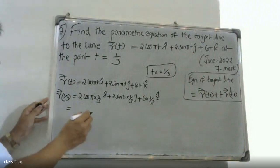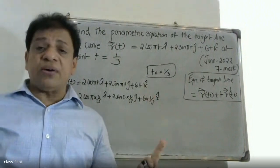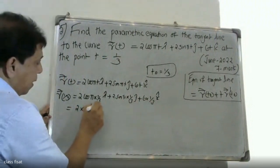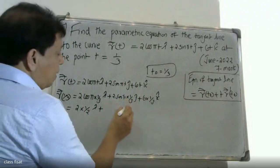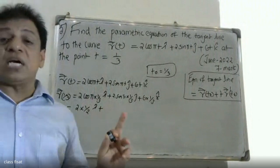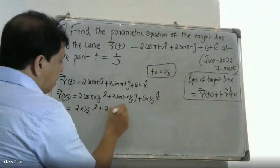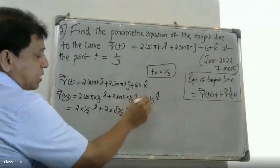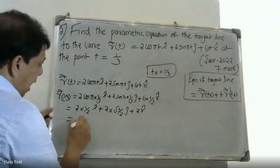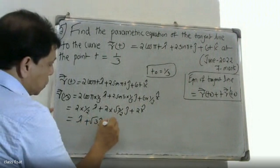r(1/3): cos(π·1/3) = cos(60°) = 1/2, so 2 × 1/2 = 1 for the i component. sin(π·1/3) = sin(60°) = √3/2, so 2 × (√3/2) = √3 for the j component. And 6 × (1/3) = 2 for the k component. So r(1/3) = i + √3·j + 2k.